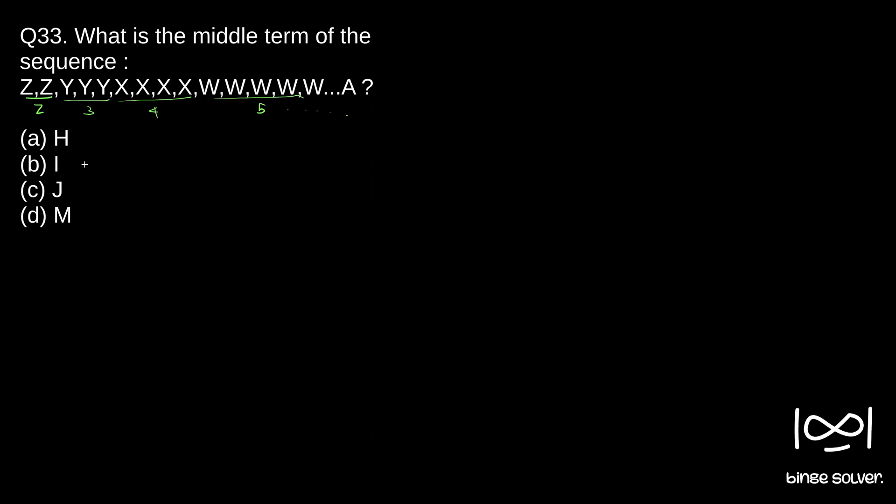So to find the middle term, we can write this 2, 3, 4 up to what? A is repeating how many times? How can we find that? Here Z is the 26th alphabet. So if you can see, 28 minus 26th alphabet is 2.